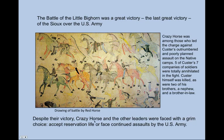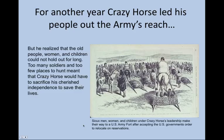Despite their victory, the Lakota under Crazy Horse and other leaders faced a grim prospect. They could either accept reservation life or face continued assaults by the U.S. Army. Crazy Horse, for one, refused to submit. For another year, he led his people just out of the U.S. Army's reach. But he realized, ultimately, that the old people, women, and children could not hold out forever. Too many soldiers, too many Bluecoats, and too few places to hunt meant that Crazy Horse would have to sacrifice his cherished independence if he was to save his people.